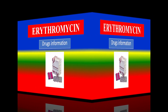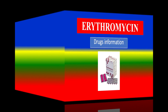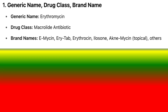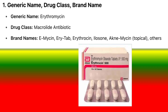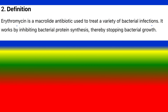Overview of erythromycin, a commonly used antibiotic. Generic name: erythromycin. Drug class: macrolide antibiotic. Brand names include E-Mycin, Eritab, Erythracin, Ilosone, Acne-Mycin (topical), and others.